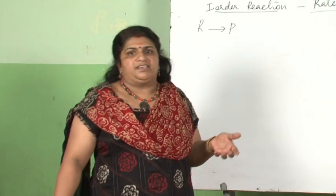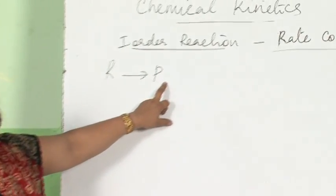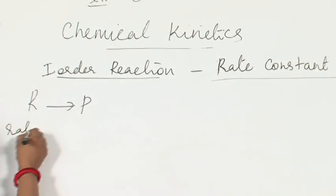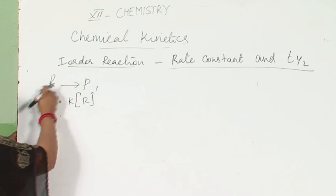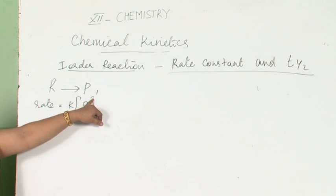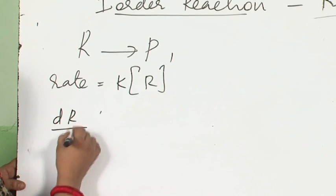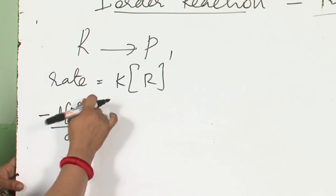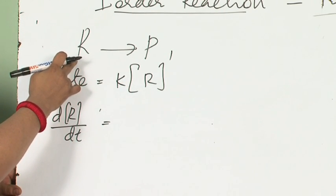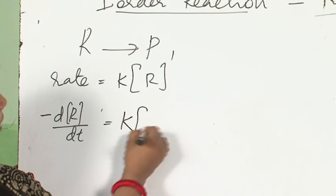Now we are going to derive the integrated rate expression for a first-order reaction. We have already derived the zero-order reaction and its half-life. Consider the reaction: reactant giving products. For a first-order reaction, the rate is equal to K into the concentration of the reactant raised to 1. So rate equals minus dR/dt, since the reactant concentration is decreasing, and that equals K into R raised to 1.